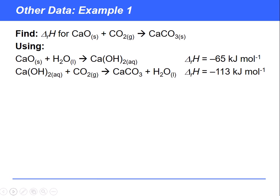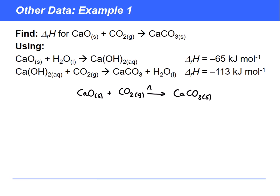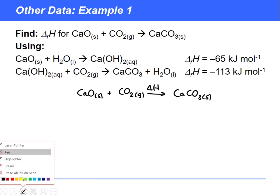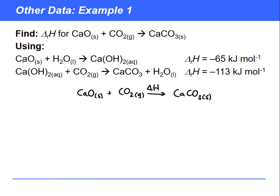Here's the first example, where we're going to try to find the enthalpy of reaction using the data shown below. It's the same basic procedure - we write out our equation and the enthalpy change we want to find. Then we need to create a cycle, and the way we're going to do this is a little bit more involved in these examples than it has been in the past.